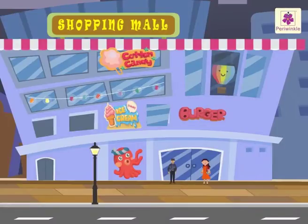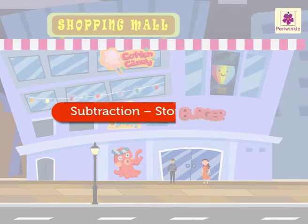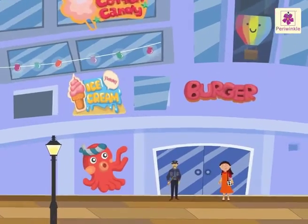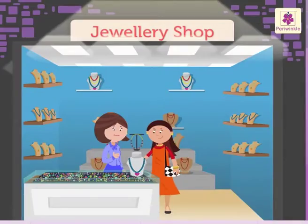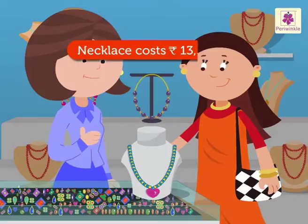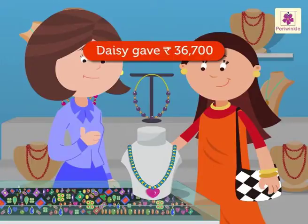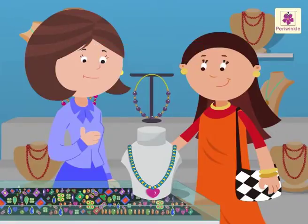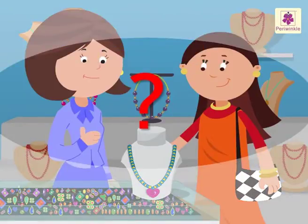Today, let us solve some subtraction problems while shopping with Daisy. Daisy has bought a necklace worth 13,534 rupees. She gave 36,700 rupees to the shopkeeper. How much money will the shopkeeper return to Daisy?